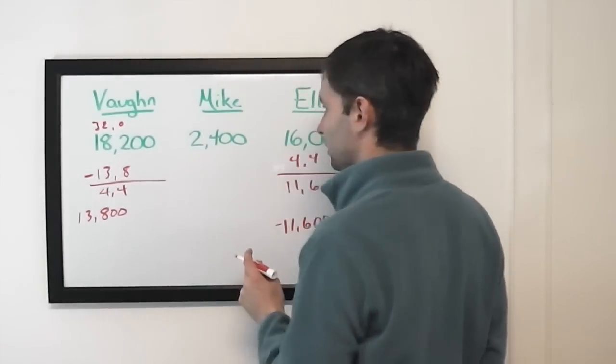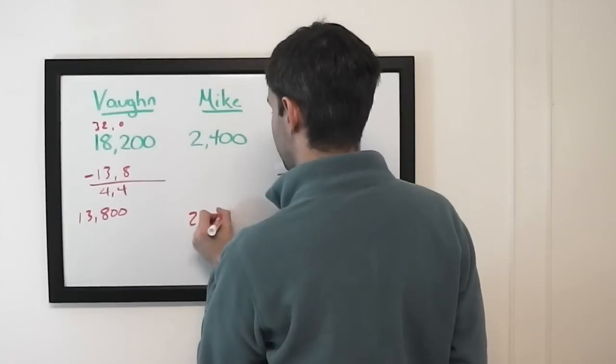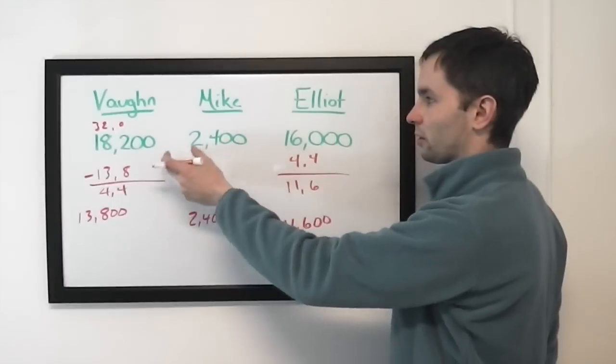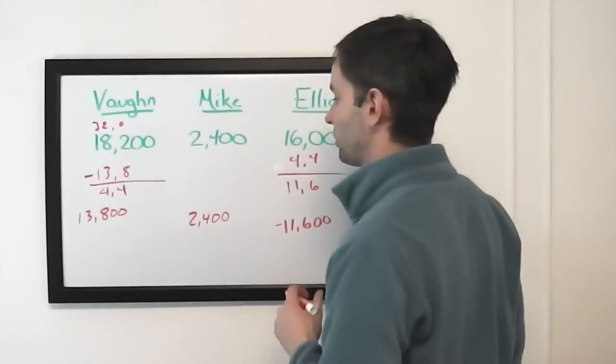And Mike can catch Vaughn, but he's going to have to wager everything. Or at least 2,000. And you can tell he's still in contention from the get-go, because he has 2,400, the difference between Vaughn and Elliott is 2,200. Remember, you have to have at least the difference between first and second if you're in third.